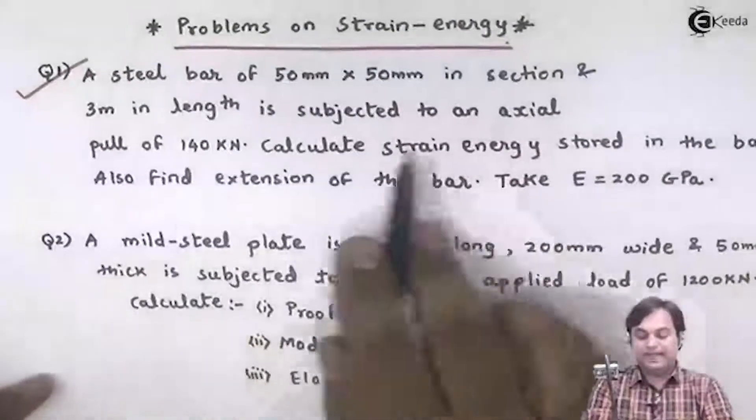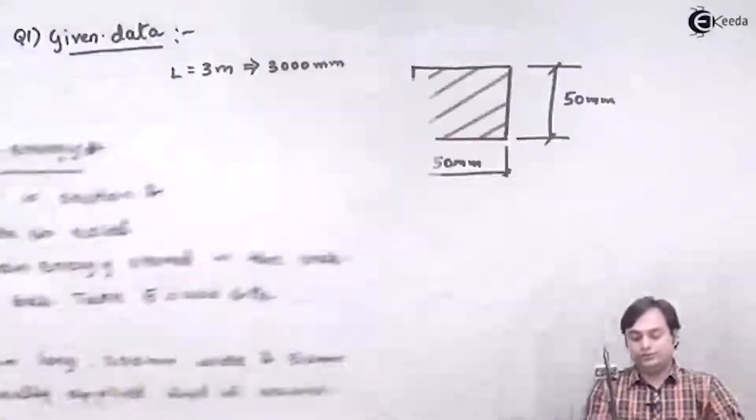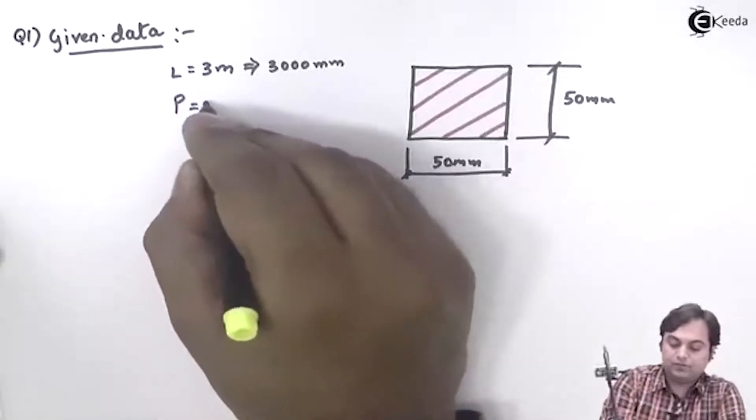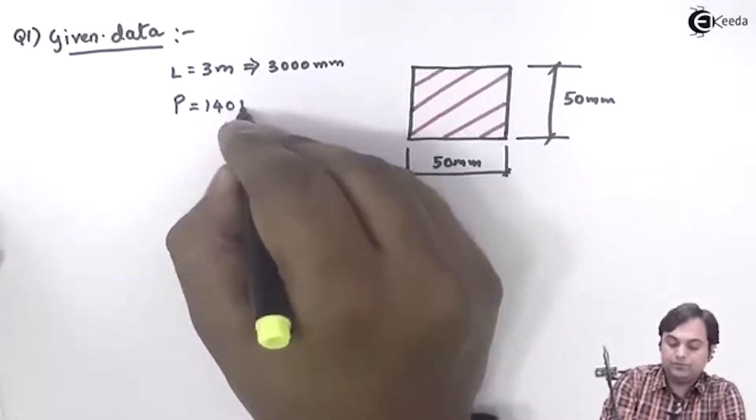It is subjected to an axial pull of 140 kilonewton, so the value of load is 140 kilonewton, which is 140 × 10³ newton.